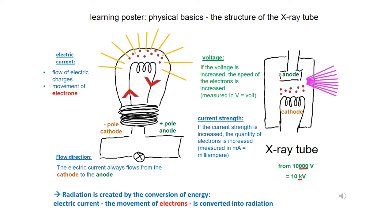To sum up, radiation is created by the conversion of energy. Electric current, the movement of electrons, is converted into radiation, into visible light or into X-rays.